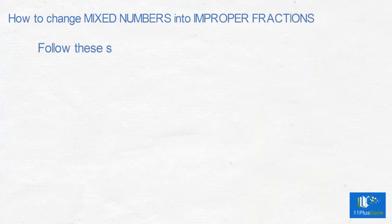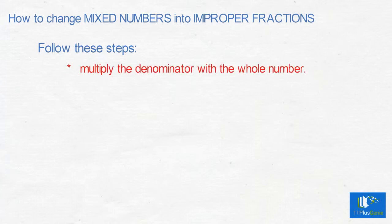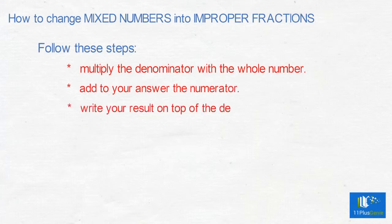How to change mixed numbers into improper fractions? Follow these steps. Multiply the denominator with the whole number, add to your answer the numerator, and write your result on top of the denominator.